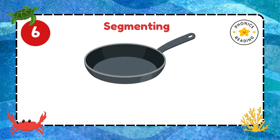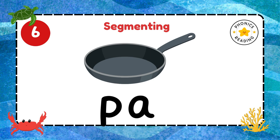Can you write pan? Pan. P is the first sound. Stretch the word, say it slow. A is the second sound. Can you write it? Write it quickly. What is the last sound? N. Yes. Very good.